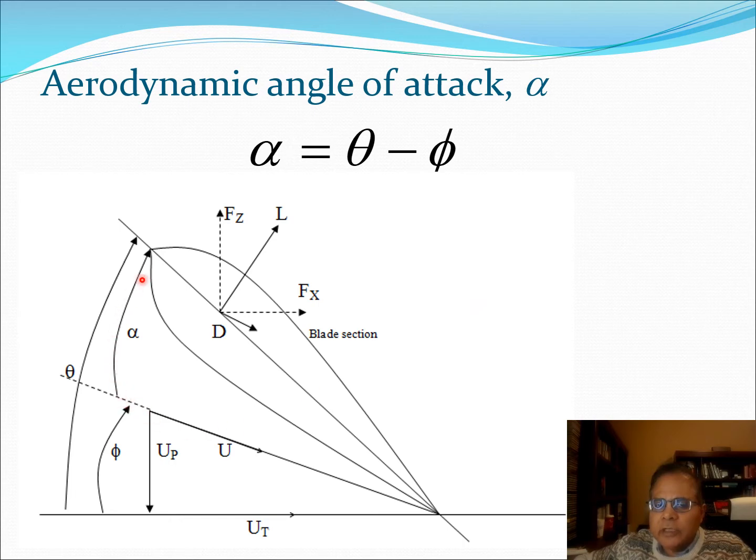Now the next angle is alpha and this is essentially theta minus phi. Because of the presence of this velocity component up, the actual air flow comes at some velocity u. Therefore, as far as the airfoil is concerned it essentially sees alpha as the angle which is then used to generate lift and drag.